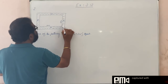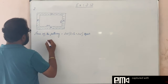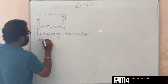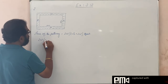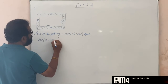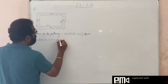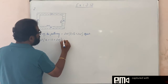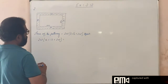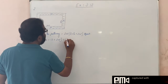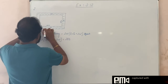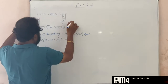Area of this pathway is 2W into (L plus B plus 2W). Length is 16, breadth is 12, plus 2W. Now the area increases to 285, so the total area is now 285.